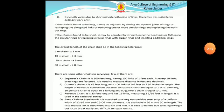The length of 66 feet is convenient because 10 square chains are equal to 1 acre. Similarly, 10 Gunter chains equal 1 furlong and 80 Gunter chains equal 1 mile. Revenue chain is 33 feet long and has 16 links, each measuring 2 feet 1/16 inches in length. It is used in the cadastral survey.